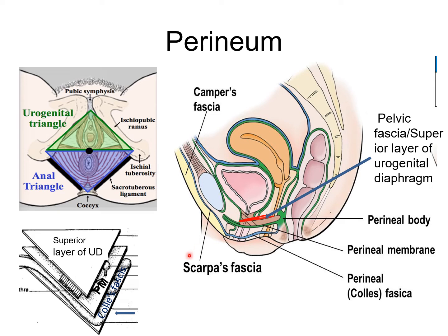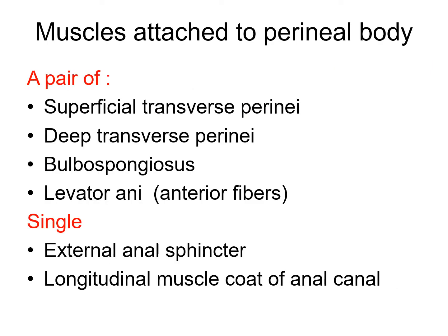These structures will be covered in detail in another class. The muscles present in both the deep and superficial perineal pouches also attach to the perineal body. Ten muscles of the perineum and pelvic floor converge and interlace at the perineal body. These include paired and unpaired muscles. The paired muscles are: superficial transverse perineal, deep transverse perineal, bulbospongiosus, and levator ani anterior fibers. The unpaired muscles are: external anal sphincter and the longitudinal muscle coat of the rectum and anal canal.